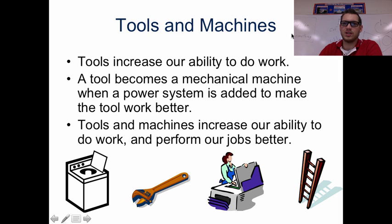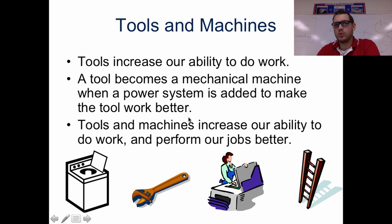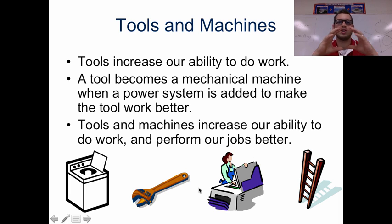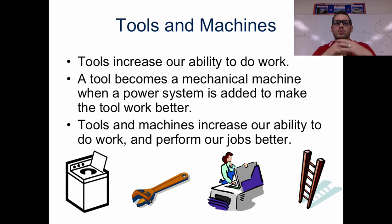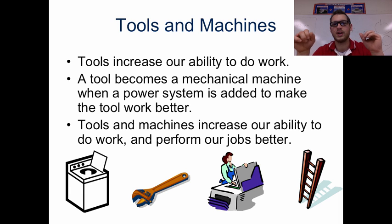The next section is tools and machines. Tools increase our ability to do work. A tool becomes a mechanical machine when a power system is added to make the tool work better. Tools and machines increase our ability to do work and perform our jobs better. Think of this wrench — if you were to try to tighten down a bolt with just your hands, there's only a certain amount of force you can apply. Adding the wrench moves your hand out further, gives you leverage, and allows you to increase the amount of torque being used to tighten it.